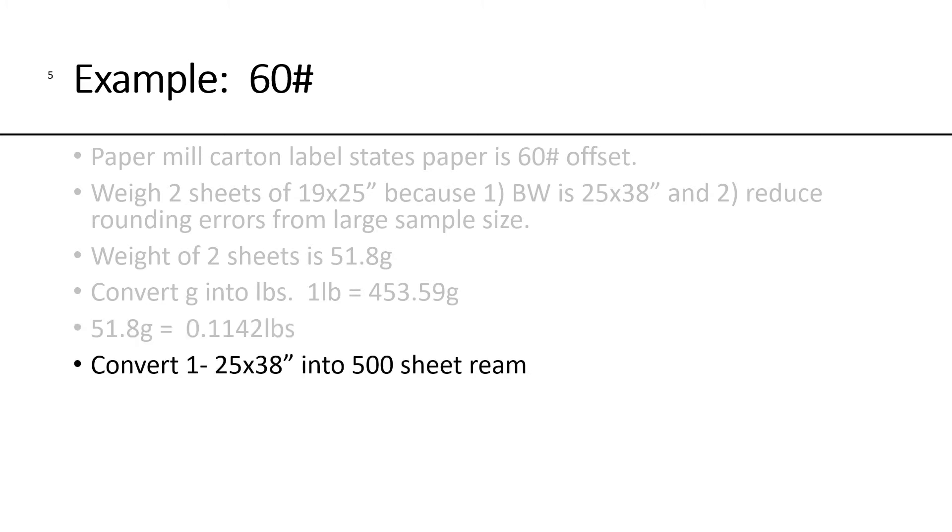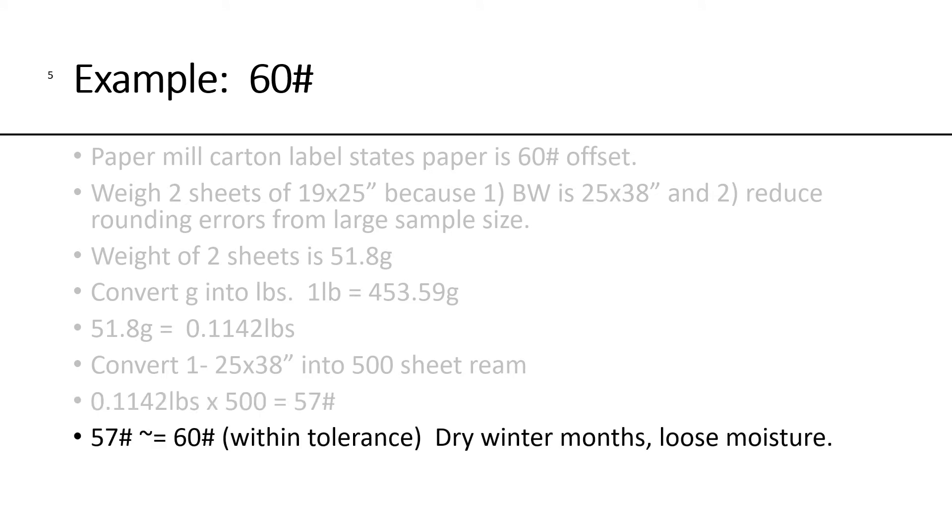Now, what we need to do is take one sheet of 25 by 38 and convert it into a 500-sheet ream. So, you're going to take that and multiply it by 500, and the answer is 57 pounds.